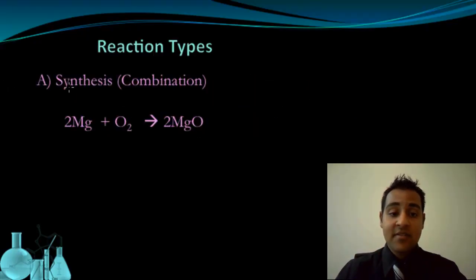The first reaction type is synthesis, which is sometimes referred to as combination. Synthesis reactions generally involve two species on the reactant sides, typically elements, that combine to form one product. That's the key to recognizing synthesis. Something plus something else, A plus B, yields AB. There's only one product in a synthesis reaction.